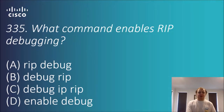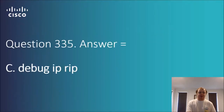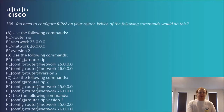Question 3.35: what command enables RIP debugging? The options are: RIP debug, debug RIP, debug IP RIP, and enable debug. This one comes down to knowing the syntax from the textbook. The answer is C — debug IP RIP — to bring up that debugging information.